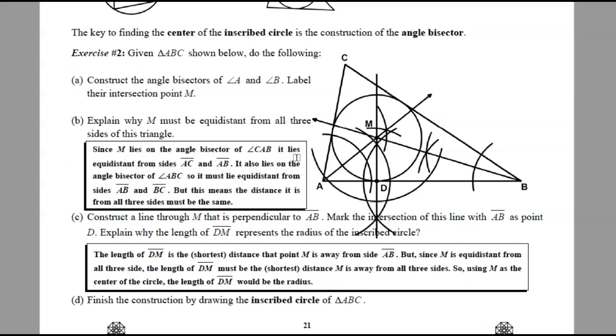All right, so the next step is to construct a line through M that is perpendicular to AB. And mark the intersection of that line with AB as point D. Okay, so then if I have to go through perpendicular to AB through point M, recall a couple lessons ago we did that construction.